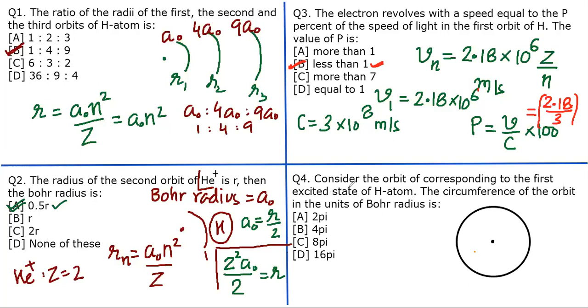Consider the orbit corresponding to the first excited state of hydrogen atom. The circumference of the orbit in the units of Bohr radius is, right? That means they are asking the answer after you eliminate the Bohr radius. So there are two things: first you need to get to the radius of this orbit and then finally you have to find the circumference as 2πr.